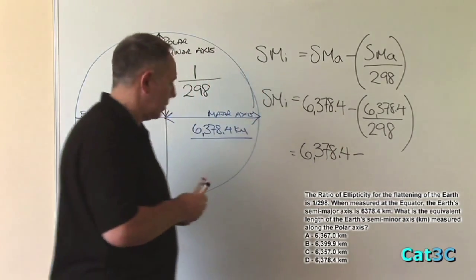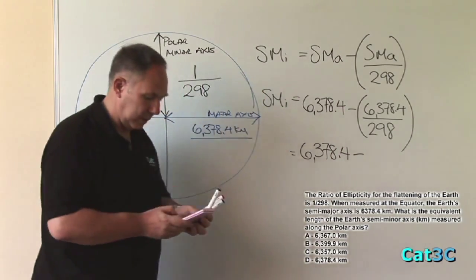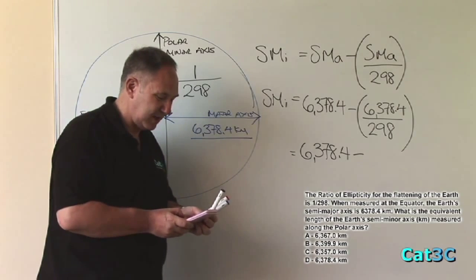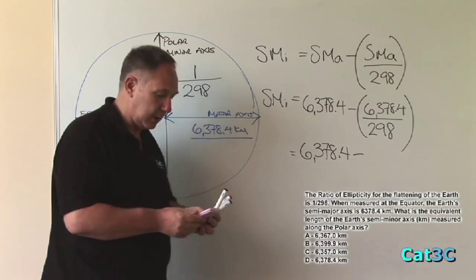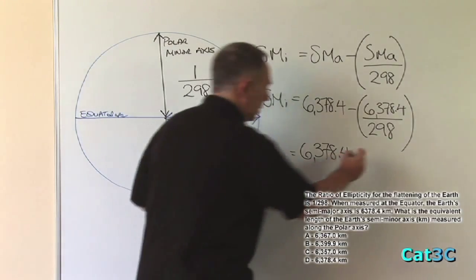And to find the value of that, we use the calculator. And we enter into the calculator, 6,378.4, divided by 298, and it equals 21.4 kilometres.